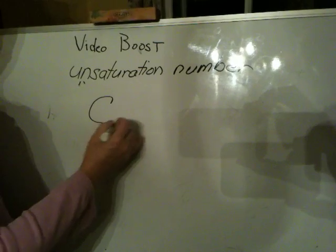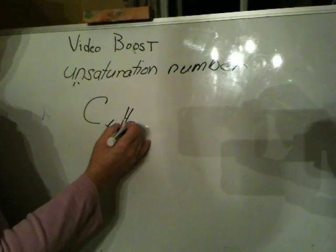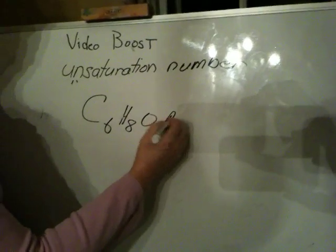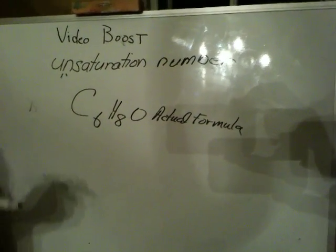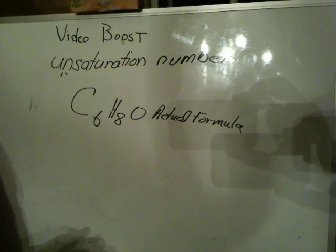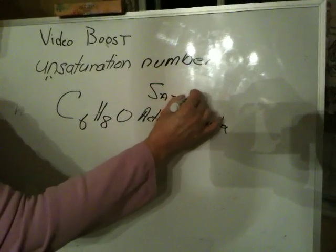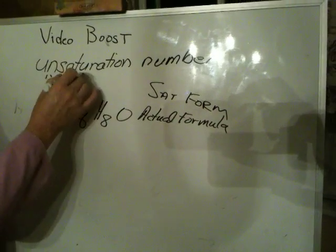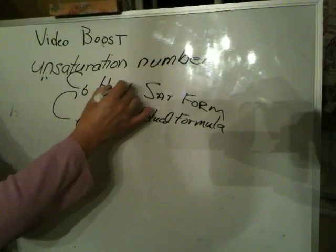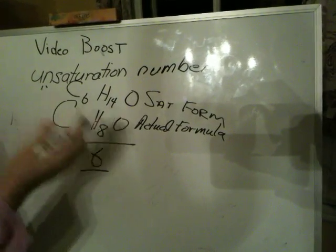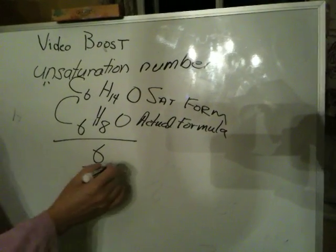Supposing you have C6H8O — that's the actual formula. What I told you in class is you want to compare that to the so-called saturated formula. How do you calculate the saturated formula? You use CnH2n+2. So the saturated formula is C6H14O — that's 12 plus 2, so 14. The difference is 6. Then 6 divided by 2, because we're interested in pairs of hydrogens, equals 3.